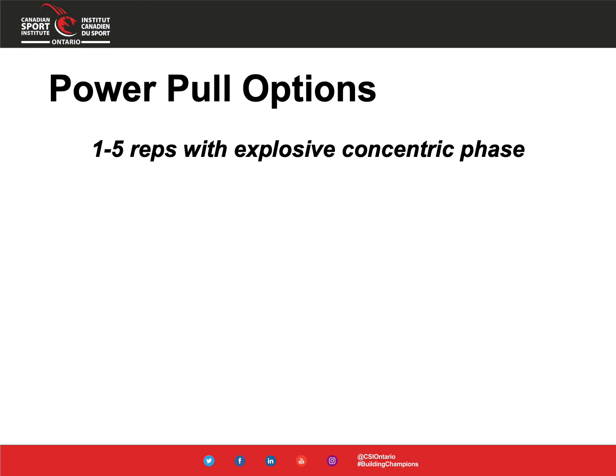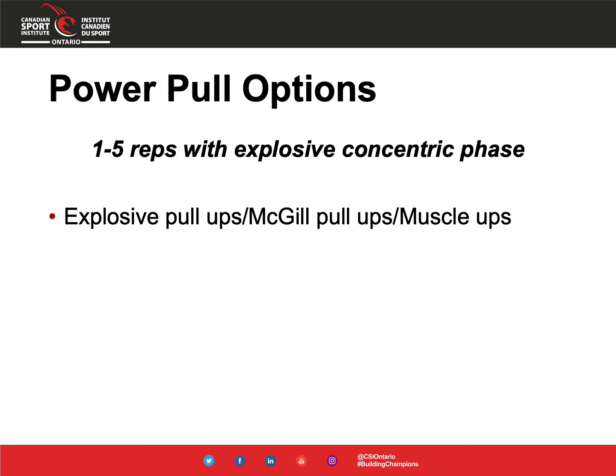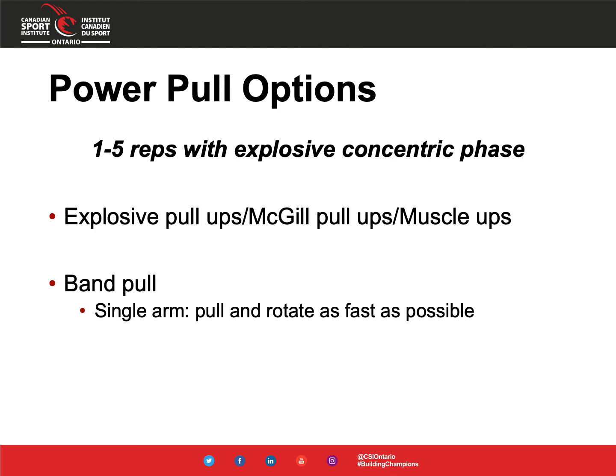For power pulling options — one to five reps with explosive concentric phase. Explosive pull-ups, sometimes called McGill pull-ups, involve pulling yourself to the bar as quickly as possible. Muscle-ups require sufficient speed to get over the bar. Many athletes won't be strong enough for these. Single arm band pulls are a great option — pull and rotate as fast as possible, teaching coordination of arms and core and conceptually similar to on-water force production.